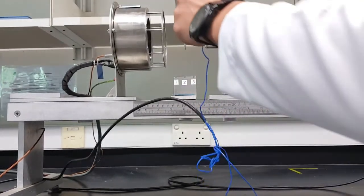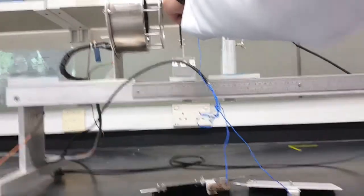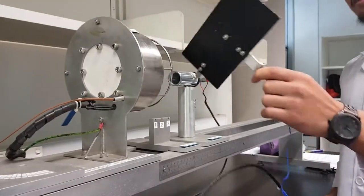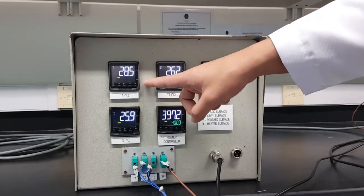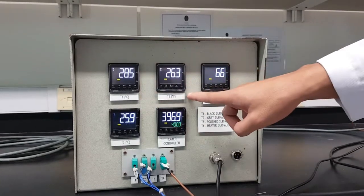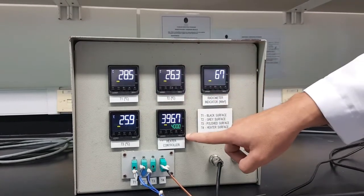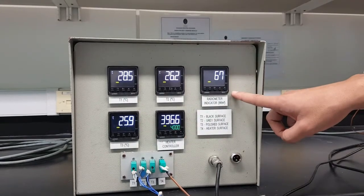First, we have to put the black body surface. So, we have to record the T1 and T2 as an ambient temperature and T4 and radiometer indicator.